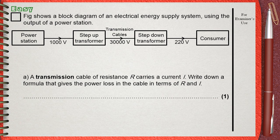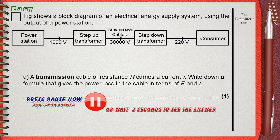Question A. A transmission cable of resistance R carries a current I. Write down a formula that gives the power loss in the cables in terms of R and I.